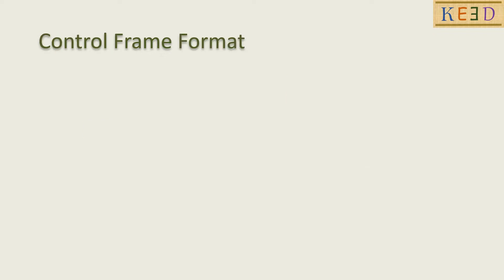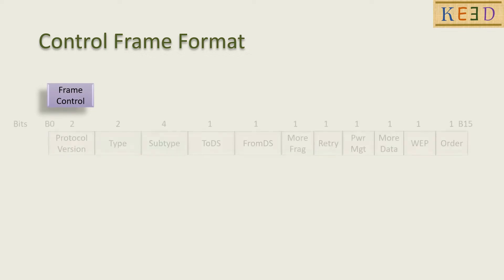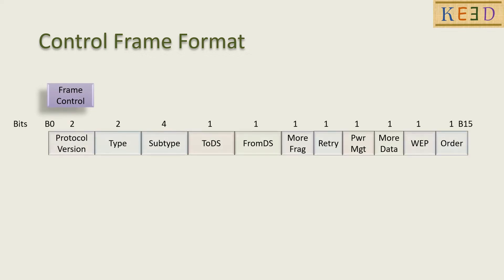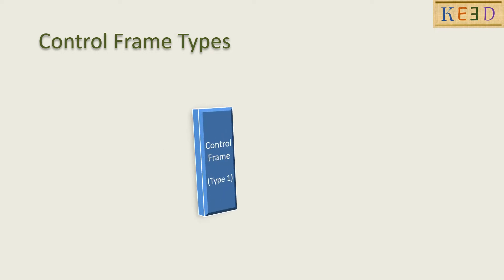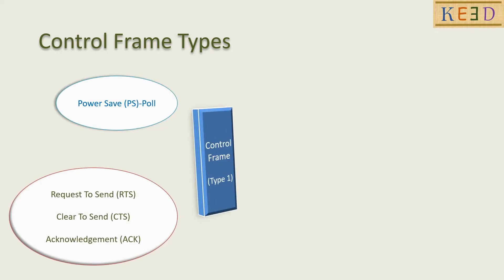Let us start with the control frame format. In the frame control field, we have protocol version as 0, type as 1, ToDS, FromDS through order are all 0. Based on subtype, the control frame is identified.